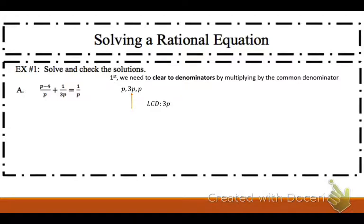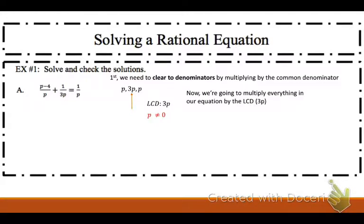Now I need to state my restrictions — you cannot forget to state restrictions. Remember last unit when we were stating restrictions? We have to continue to do that this unit. So, 3p cannot equal 0, which just means p cannot equal 0. Now that I've found my least common denominator and my restriction, I'm going to multiply everything by the least common denominator, so by 3p.